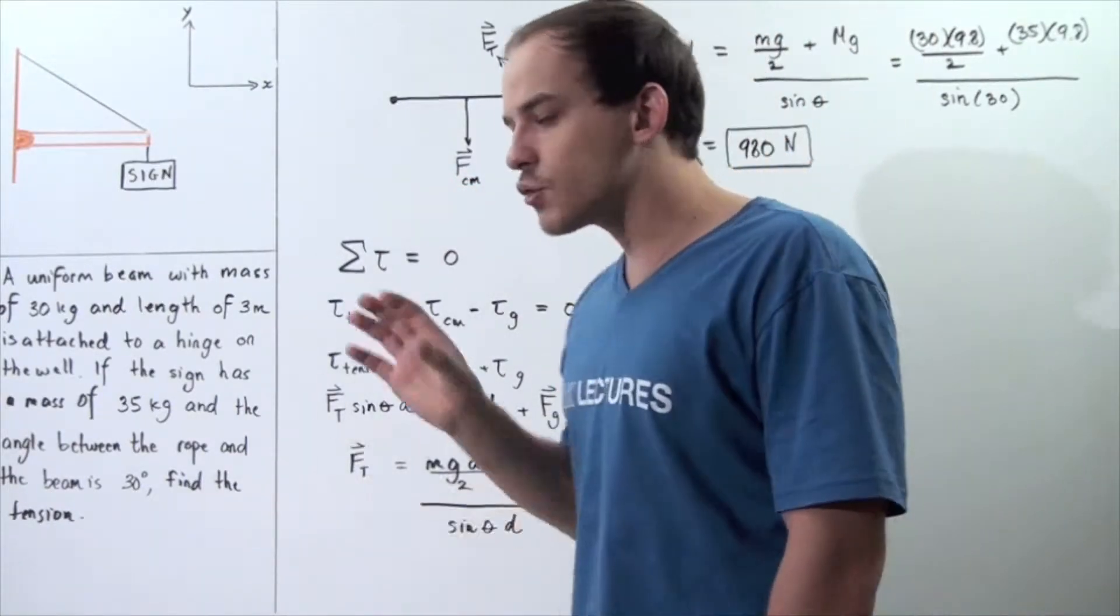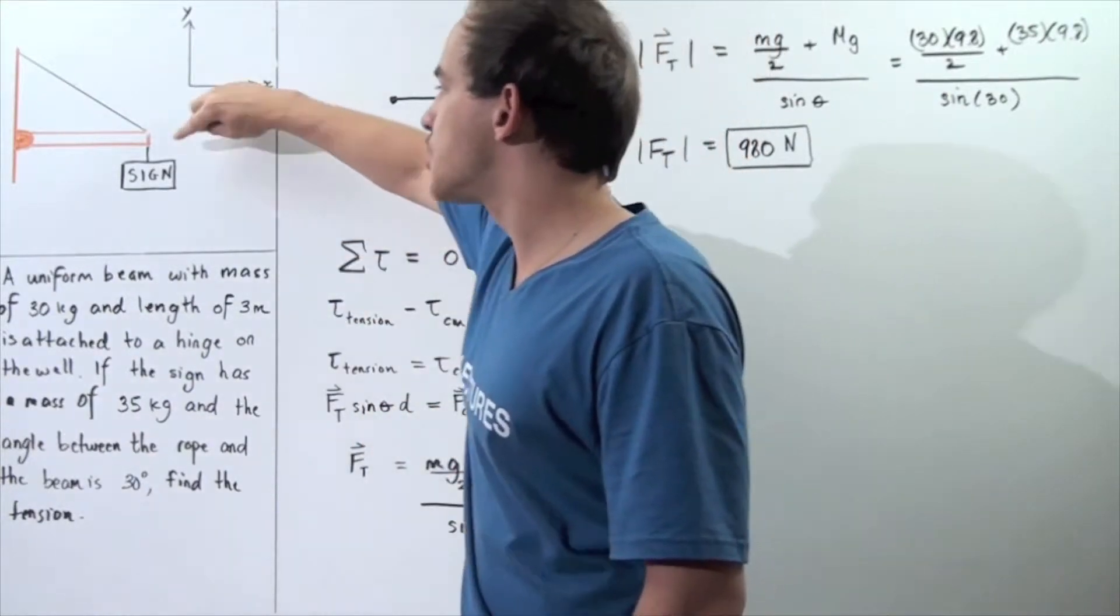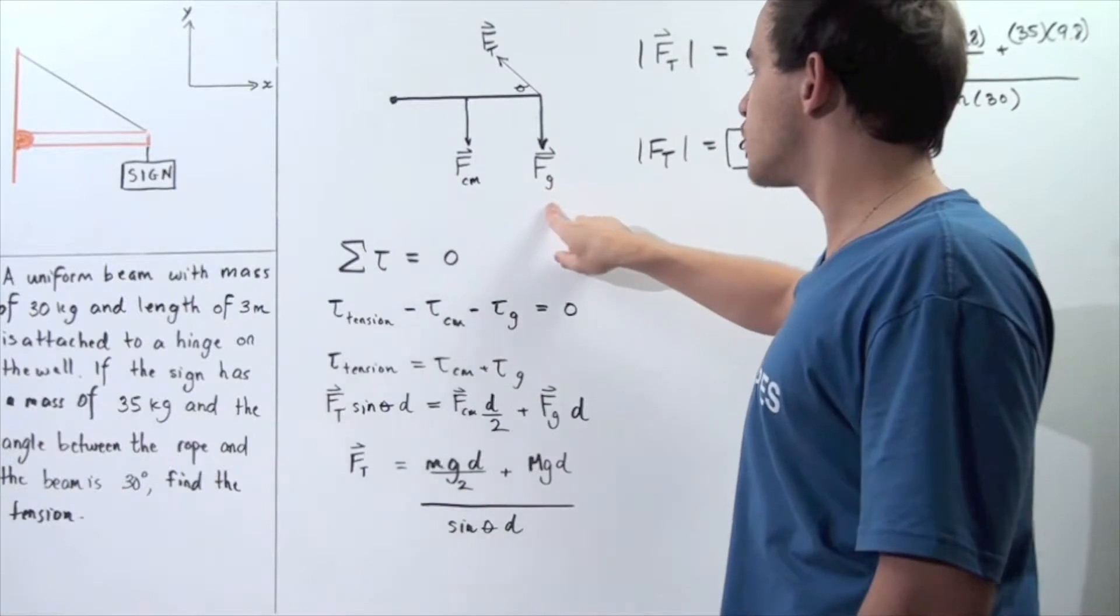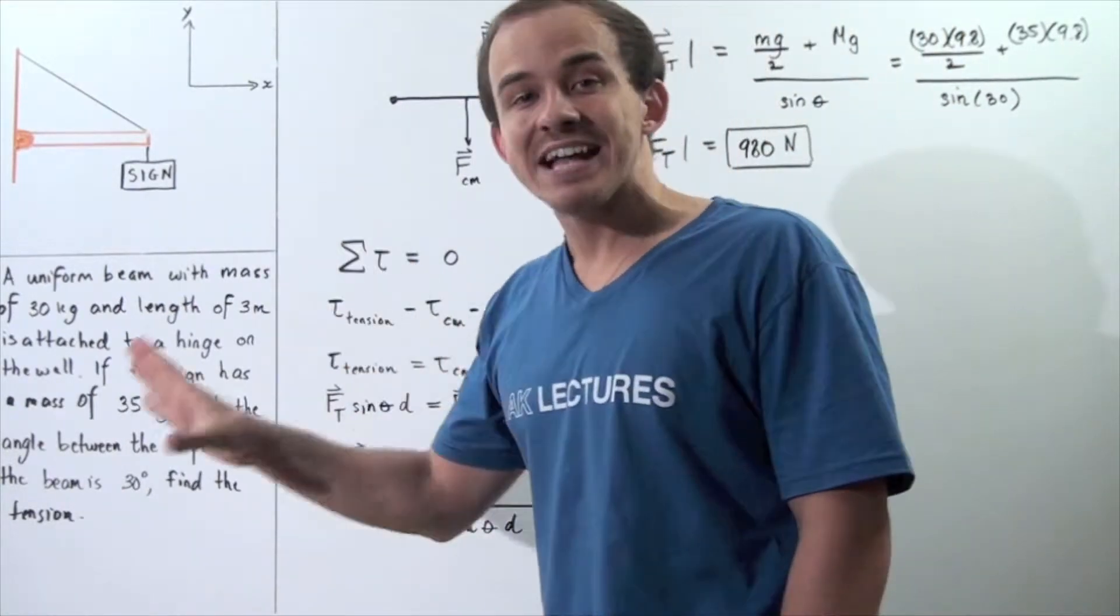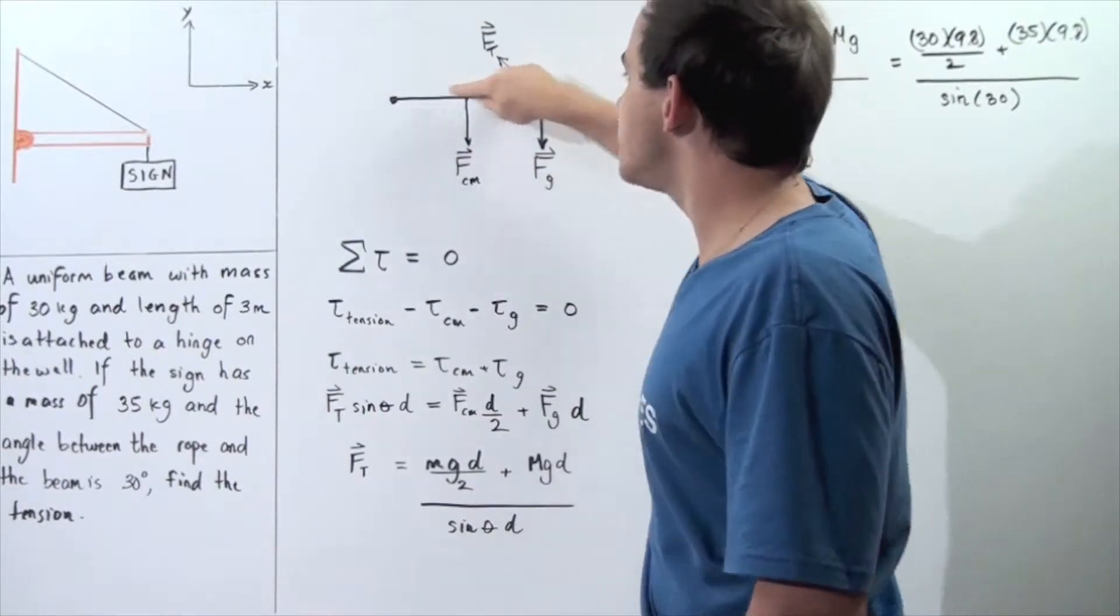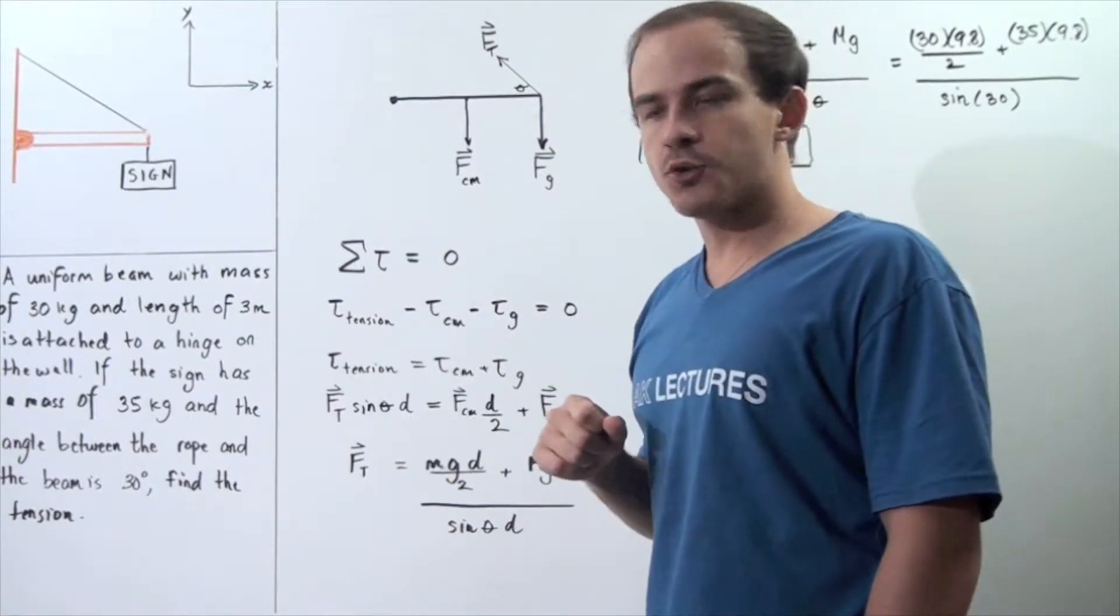We have the force of gravity which acts on the sign, which in turn acts through this rope on the beam. And we also have the tension in the rope which acts at an angle theta with respect to our beam. And this angle theta is 30 degrees.